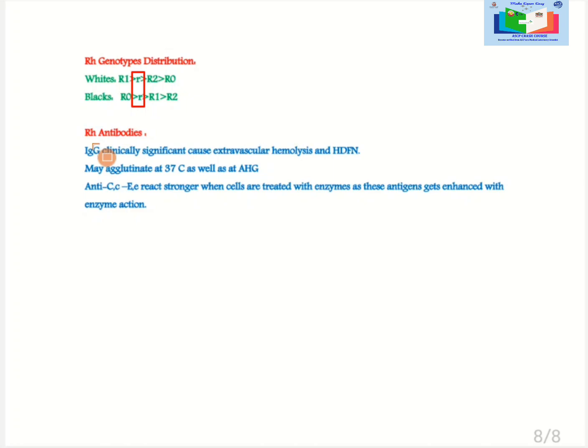RH antibodies: They are IgG in nature, clinically significant, cause extravascular hemolysis, may agglutinate at 37 celsius as well as at anti-human globulin phase. Anti-C, C, E, e react stronger when cells are treated with enzymes as these antigens get enhanced with enzyme actions.